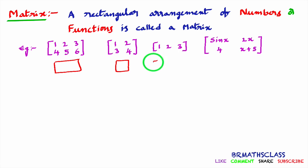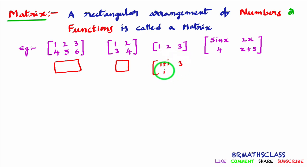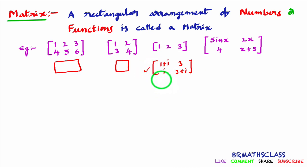Here I will write one more example. Numbers means mainly we have two types of numbers — one is real numbers, another one is complex numbers. If you got a matrix like this: 1+i, 3, i, 2+i. Is this an example of a matrix? Yes — rectangular arrangement of numbers means these numbers may be real numbers or complex numbers. So this is an example of a matrix.